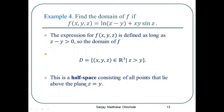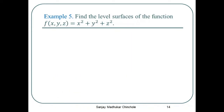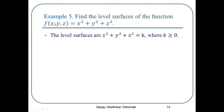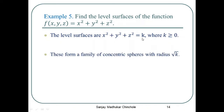Above the plane z = y represents z > y, and below the plane z = y represents z < y. Find the level surfaces of the function f(x, y, z) = x² + y² + z². The level surfaces are given by f(x, y, z) = k, that is x² + y² + z² = k. Since x², y², z² are all non-negative, k must be non-negative (k ≥ 0). This represents a sphere with radius √k, forming a family of concentric spheres with center (0, 0, 0).